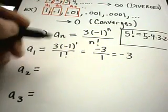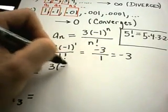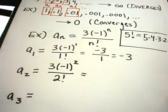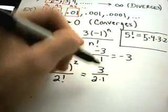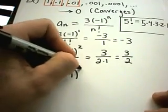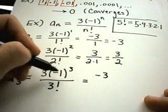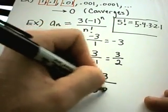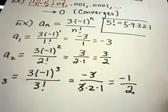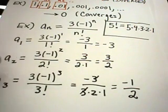For a sub two: three times negative one squared over two factorial. Negative one squared is positive one, times three is three, and two factorial is two times one, so we get three halves. For a sub three: three times negative one cubed over three factorial. Negative one cubed is negative one, so we have negative three over six. The threes cancel and we get negative one half. So the first three terms are negative three, three halves, and negative one half.